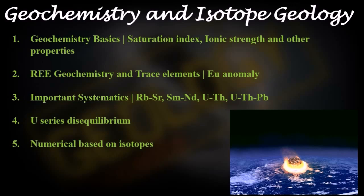Next we'll see geochemistry and isotope geology. We'll first go into geochemistry basics — the saturation index, ionic strength, activity ratio, and other properties. Then we'll go into rare earth element geochemistry and trace elements, including the europium anomaly. Then important systematics like rubidium-strontium, samarium-neodymium, uranium-thorium, uranium-thorium-lead, and uranium series disequilibrium. We'll see numericals based on isotopes.